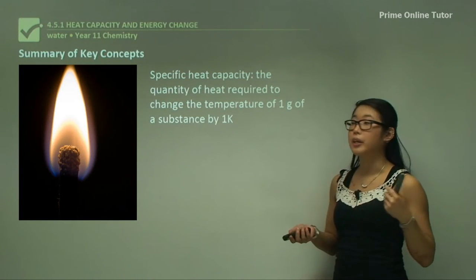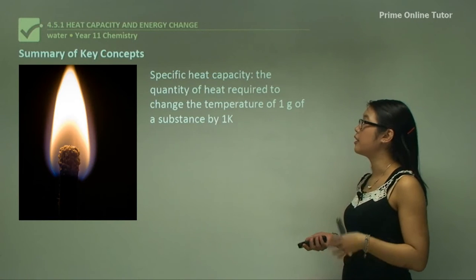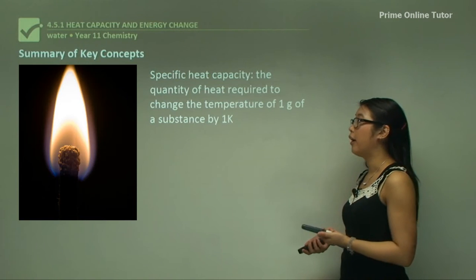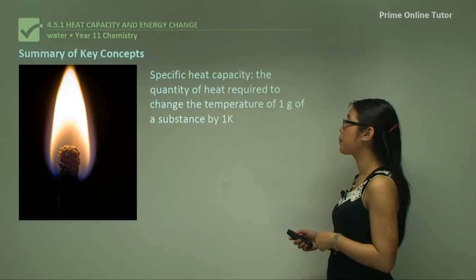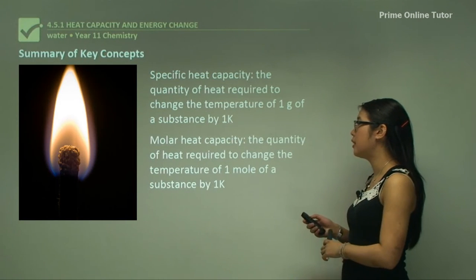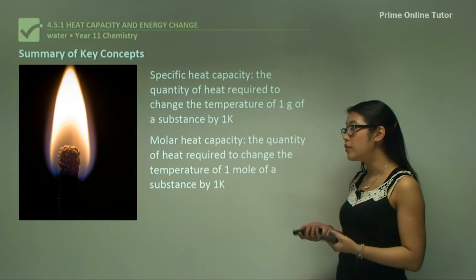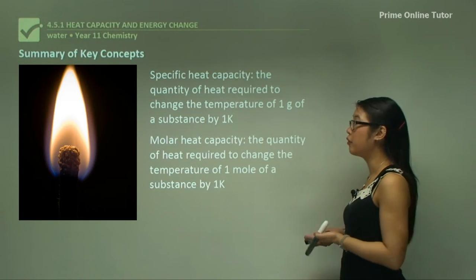In summary, specific heat capacity is the quantity of heat required to change the temperature of one gram of a substance by one Kelvin or one degree Celsius. Molar heat capacity is the quantity of heat required to change the temperature of one mole of a substance by one Kelvin or one degree Celsius.